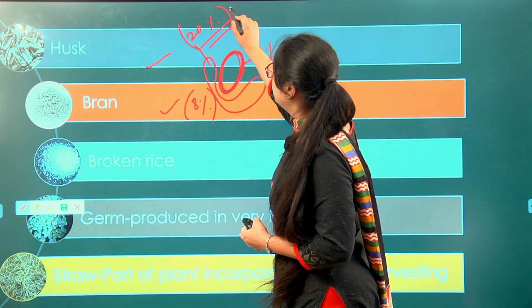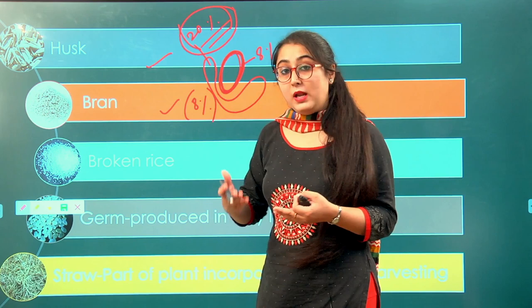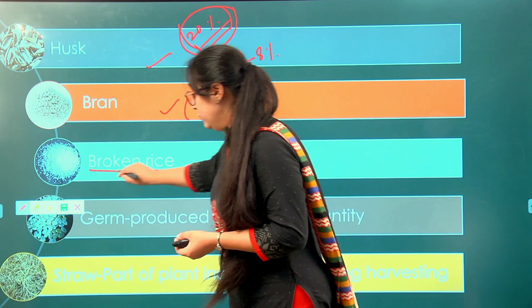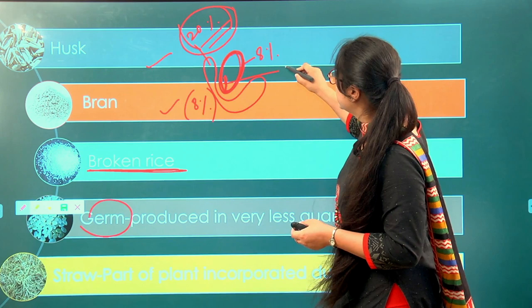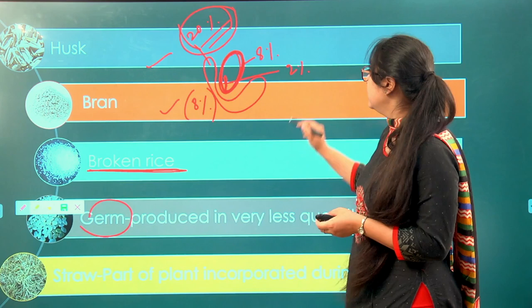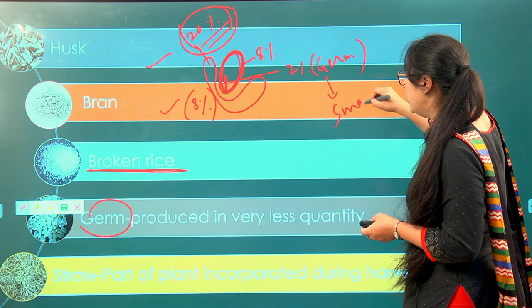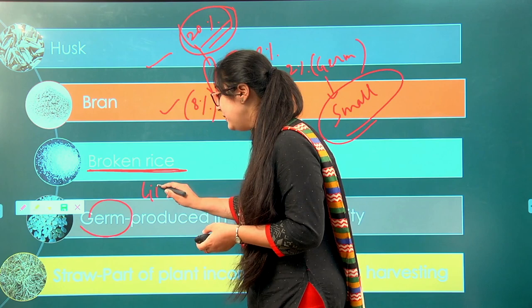During milling, because of abrasive and frictional forces, rice can be broken into smaller fragments — broken rice. These broken rice need not go to waste; they can be utilized. We also have germ, which is around 2% of the rice structure, mainly consisting of lipids and rich in vitamin E. The motive during milling is not to remove the germ, but sometimes it can be removed in very small quantities and can be utilized for fat extraction if available in considerable quantity.